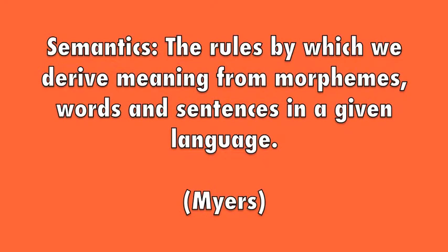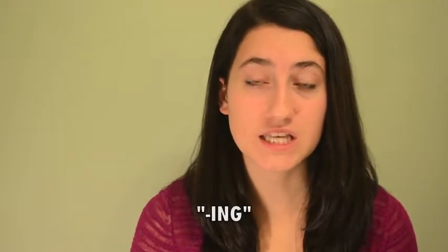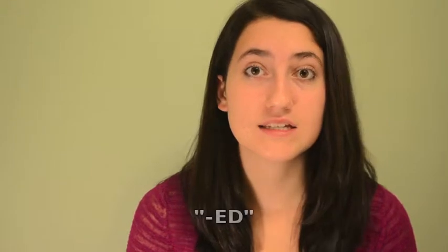Now onto semantics, which is defined by David G. Myers as the rules by which we derive meaning from morphemes, words, and sentences in a given language. For example, by adding '-ing' to the end of a verb, we understand that it's in the present tense — for example, 'I am speaking about language development.' If you add '-ed' to the end of a verb, you understand that it's in the past tense: 'I talked about semantics.'